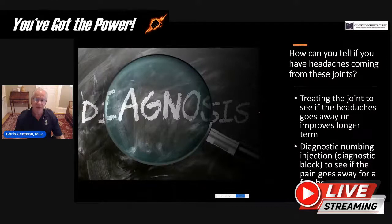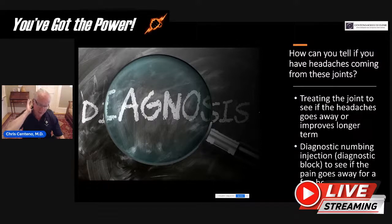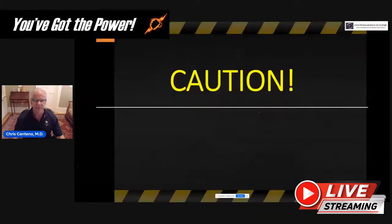So how can you tell if you're having headaches coming from these joints? There are two basic methods. One is treating the joint to see if the headaches go away or improve longer term. The other is diagnostic numbing injections, also called a diagnostic block — where we numb the specific joints to see if your headache goes away for a few hours. Either one of these could be used to get to a diagnosis.